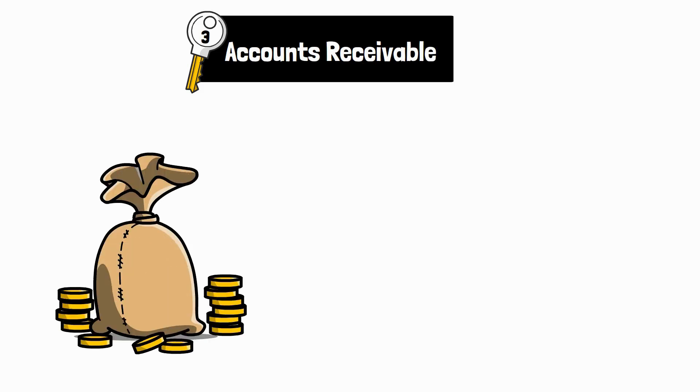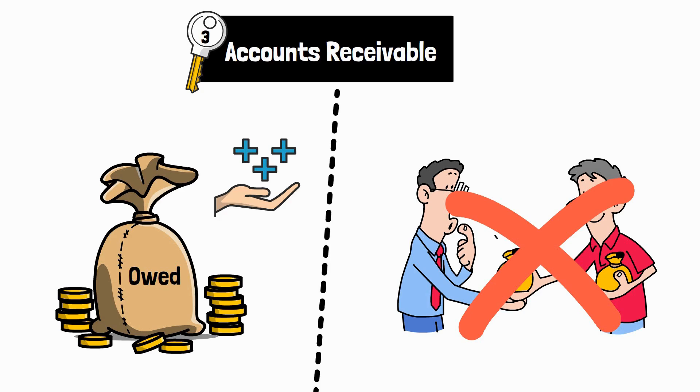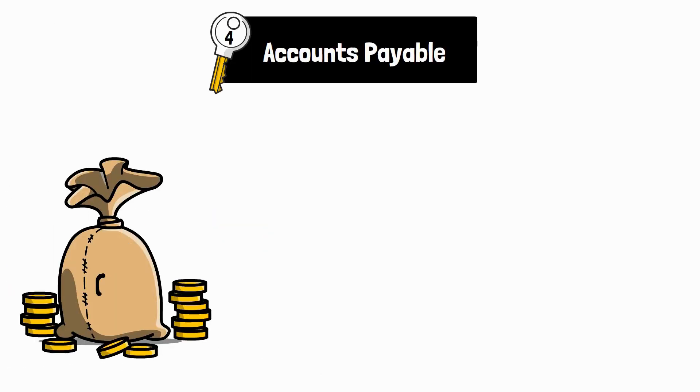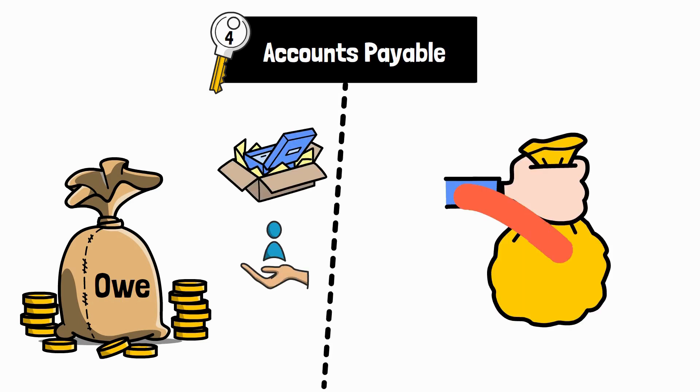Three, accounts receivable. Money you're owed. You've earned it, but you haven't received it yet. Four, accounts payable. Money you owe. You've received a product or a service, but you haven't paid for it yet.